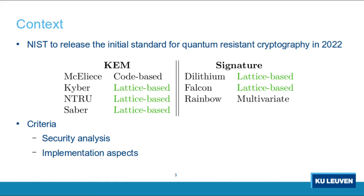Let's first look at the context of this work. NIST, the National Institute of Standards and Technology, is going to release in the coming year the first standard for quantum-resistant cryptography. We already know the finalists for both KEM and signature categories, and lattice-based schemes turn out to be the preferred solution. The selection criteria by NIST will include security analysis as well as implementation aspects — efficiency on different platforms, side-channel security, and other issues.